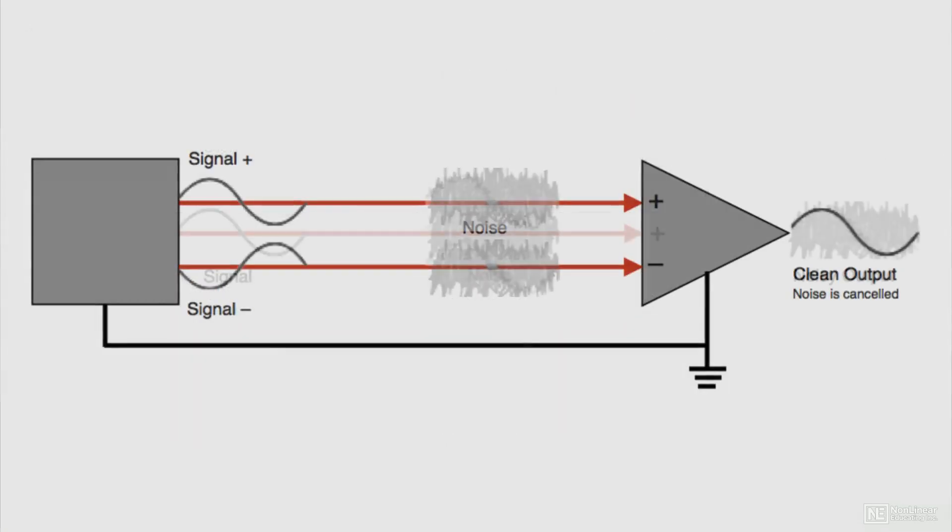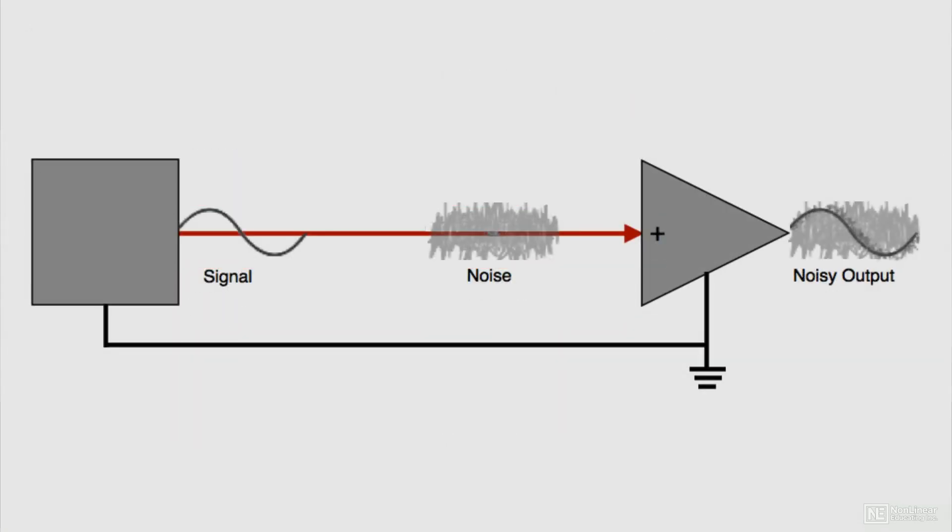Audio cables can be either balanced or unbalanced. An unbalanced cable uses two wires, hot and neutral, to carry a single signal.